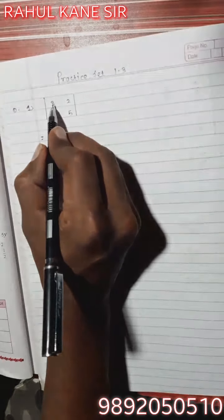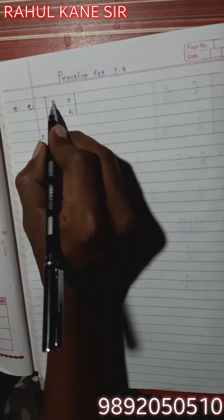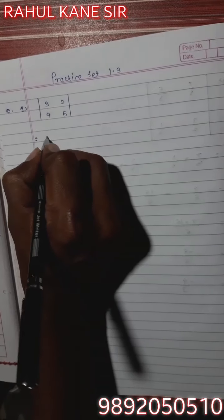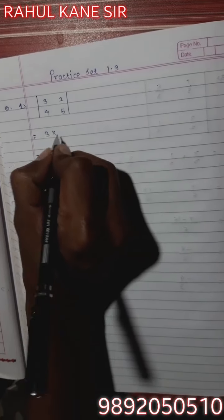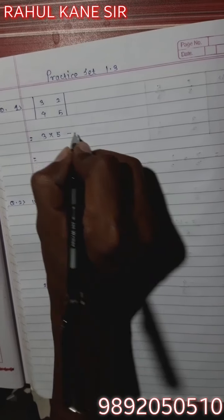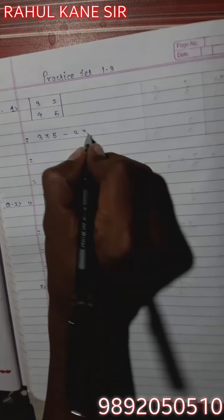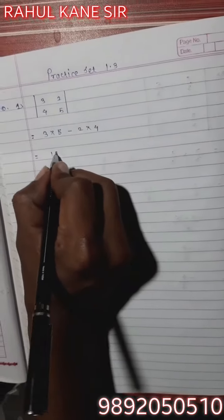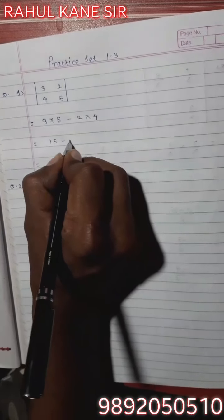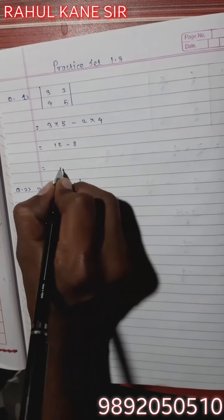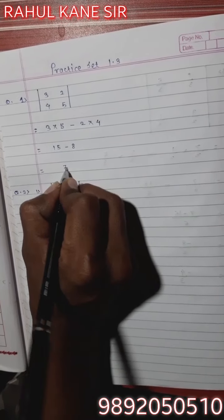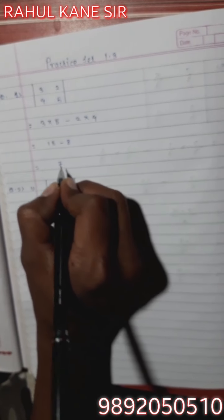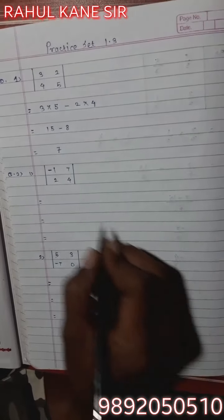First one: the absolute value of |3, 2, 4, 5|. The solution is 3 multiplied by 5 minus 2 multiplied by 4. 3 fives are 15, minus 2 fours are 8. 15 minus 8 equals 7. So the value of the determinant is 7.